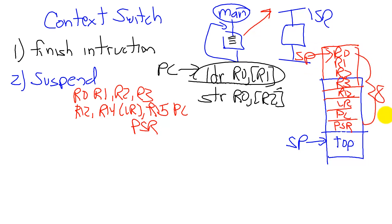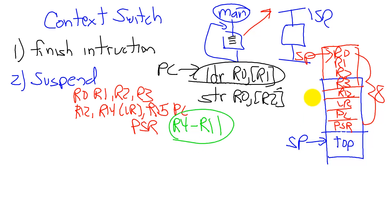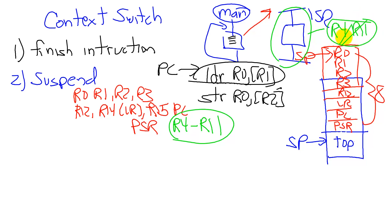So why are we only pushing these registers and what about those other registers, R4 through R11? These eight registers are actually not pushed on the stack. When the programmer writes their interrupt service routine, we will not use R4 through R11 — they are not used in the interrupt service routine, so there's no need to save them.